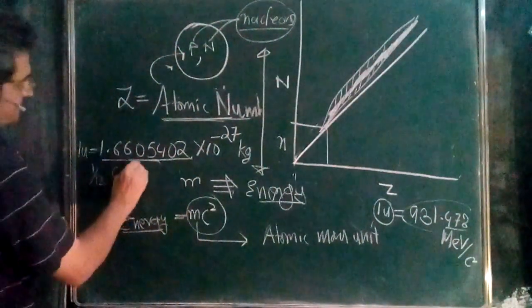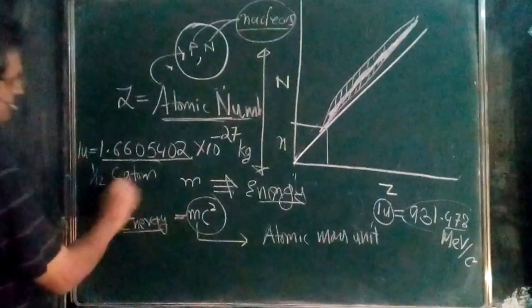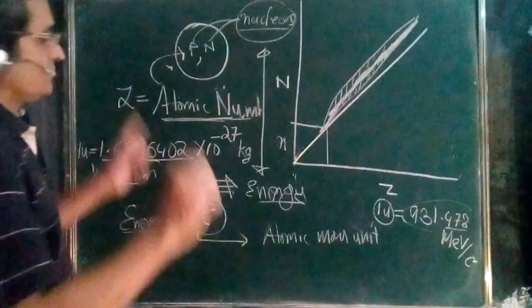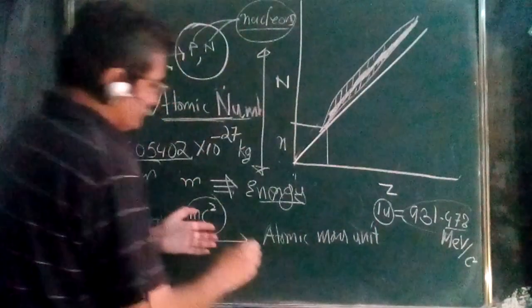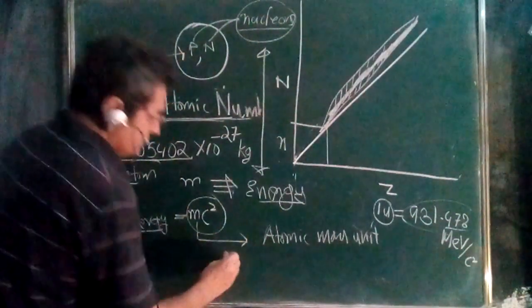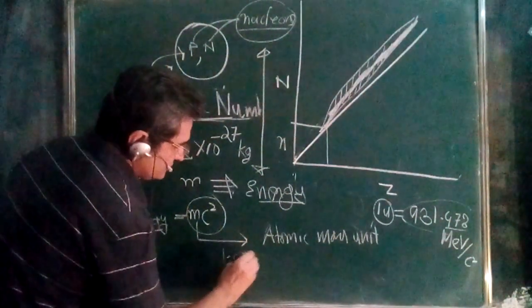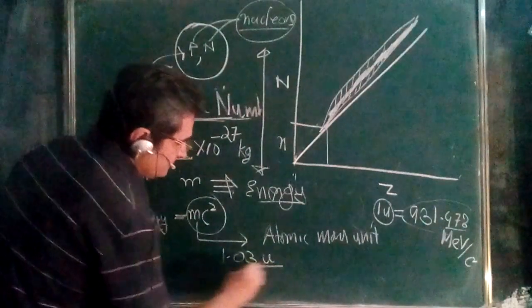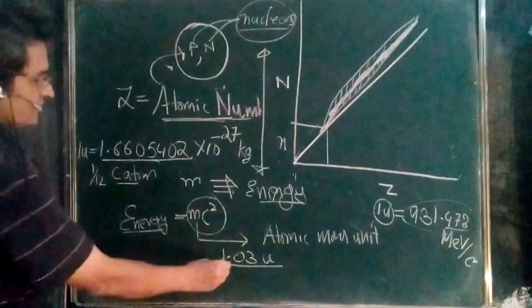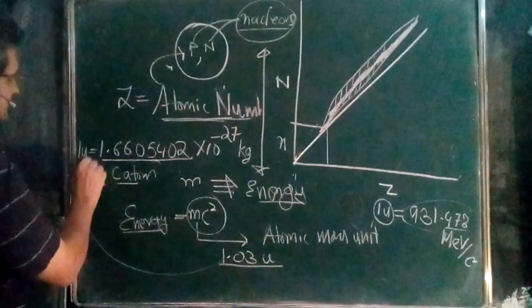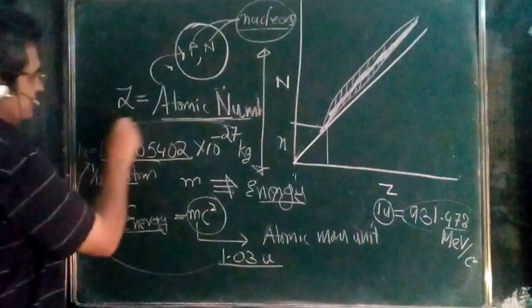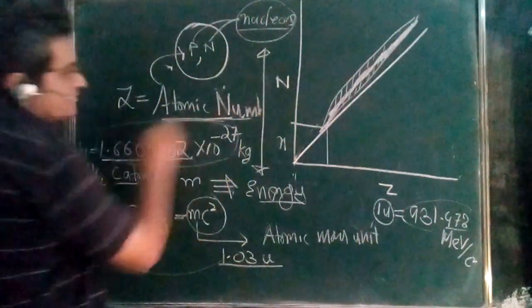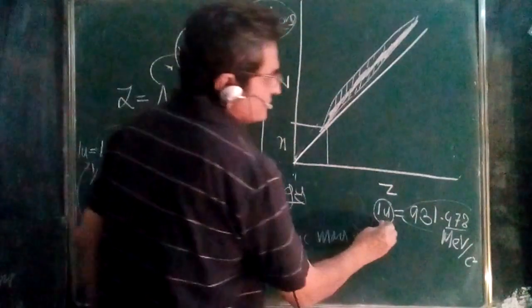If you are given a mass of 1.03u, it means 1.03 times the atomic mass unit. The value of one atomic mass unit in terms of energy is important for conversions.